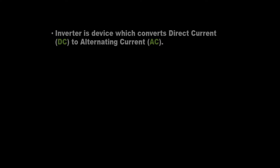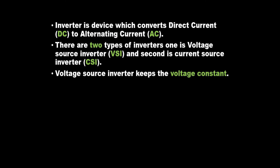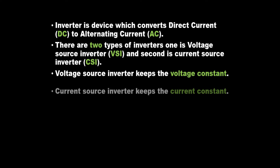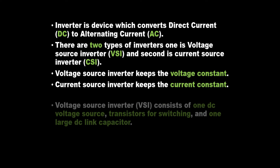Voltage source inverter VSI. An inverter is a device which converts direct current, DC, to alternating current, AC. There are two types of inverters: one is voltage source inverter, VSI, and the second is current source inverter, CSI. Voltage source inverter keeps the voltage constant; current source inverter keeps the current constant.